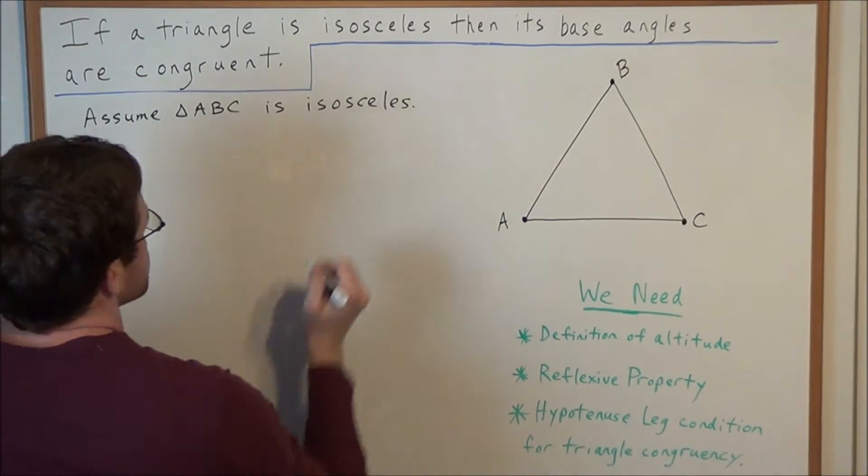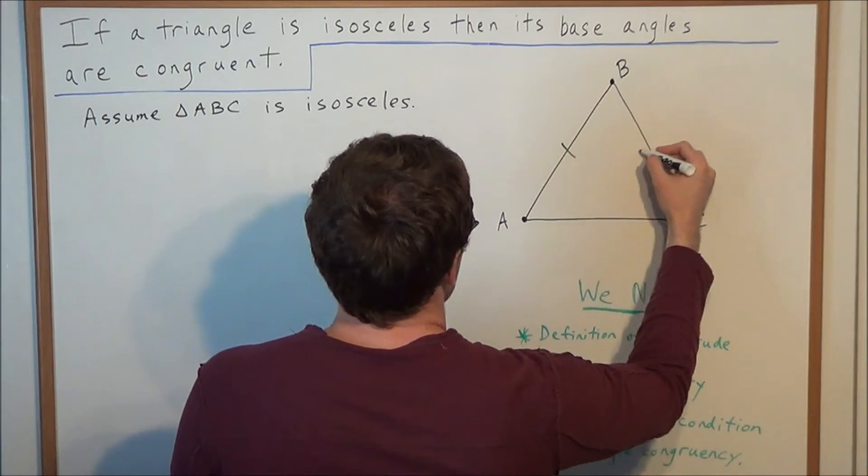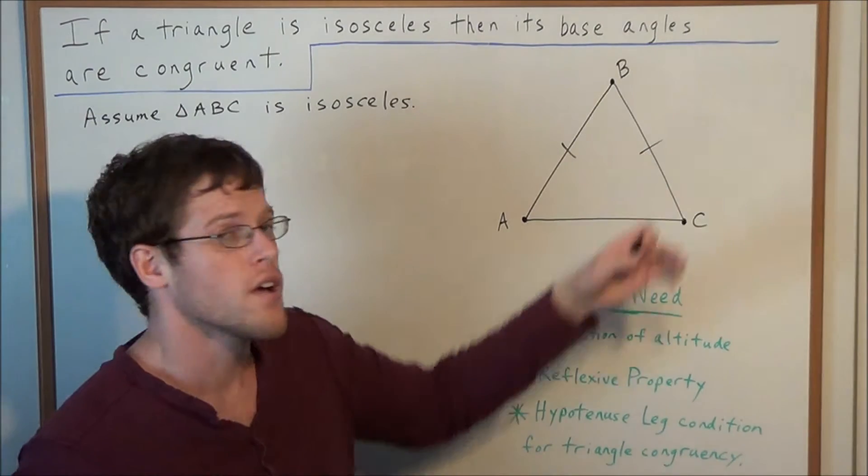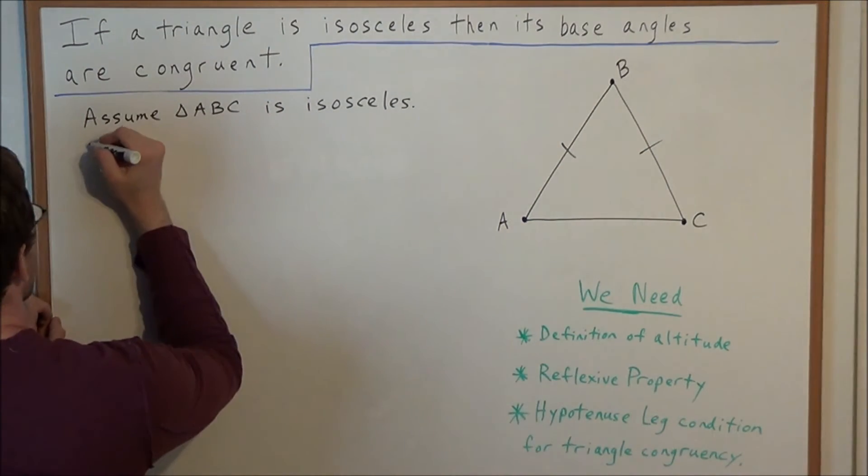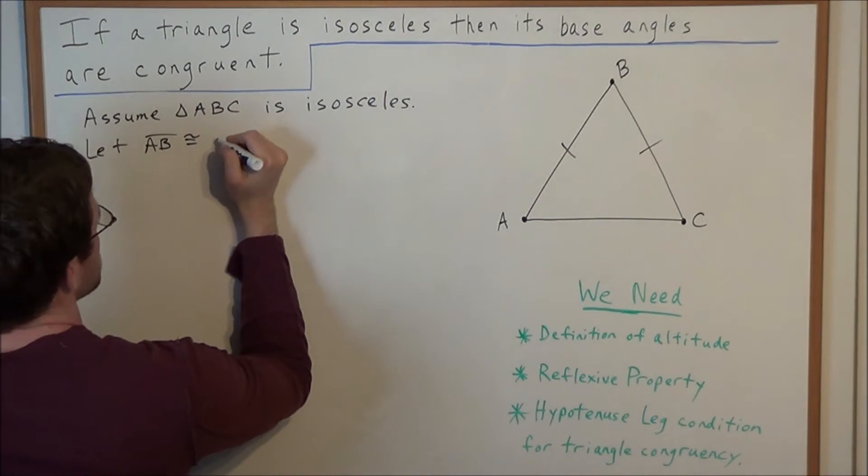And now, what that allows us to do, we can choose two sides to be congruent, because by definition, an isosceles triangle has a pair of congruent sides. So, we can let side AB be congruent to side BC.